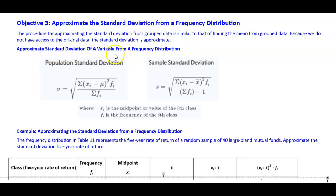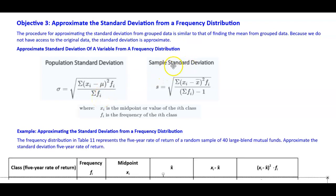To approximate the standard deviation of a variable from a frequency distribution, we have a population standard deviation and a sample standard deviation. The population standard deviation sigma equals the square root of the sum of the midpoint minus the mean, squared, times the frequency, divided by the sum of the frequencies. The sample standard deviation s equals the square root of the sum of the midpoint minus the sample mean, squared, times the frequency, divided by the sum of the frequencies minus 1.